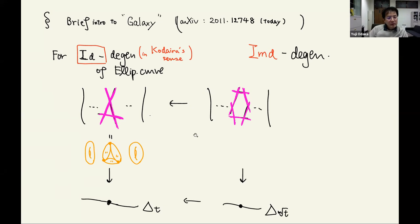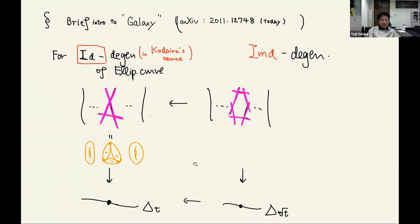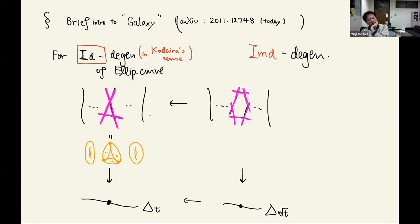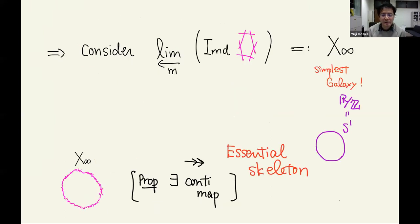One difficulty of the Calabi-Yau degeneration is that, even in the elliptic curve case, we have I_N degenerations for all N. If you take a base change and take the minimal resolution of the appearing A-type singularity, the index D gets multiplied. To remove the ambiguity with respect to the base change, I propose the notion of a galaxy. We can instead take a projective limit of this.